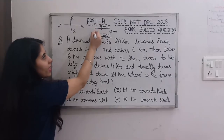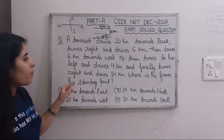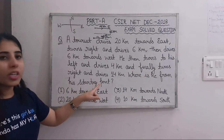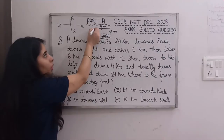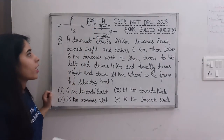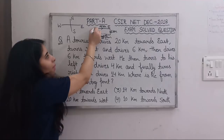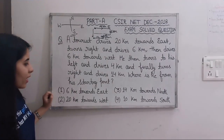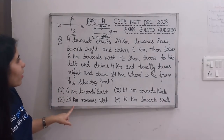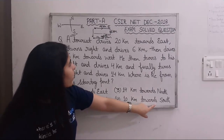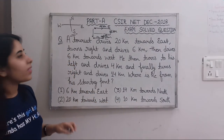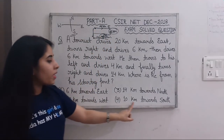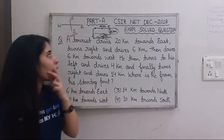Now, where is he from his starting point? Looking at the diagram — his starting point is the origin. The final point is south of the starting point. The south displacement is 6 km (first southward move) plus 4 km (northward move subtracted)... actually the net vertical is 6 km south minus 4 km north, giving 10 km south overall. So the answer is 10 km towards south.